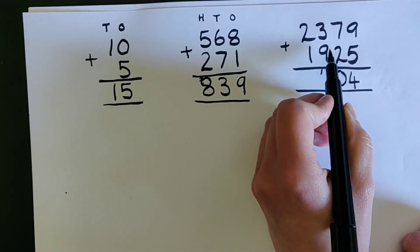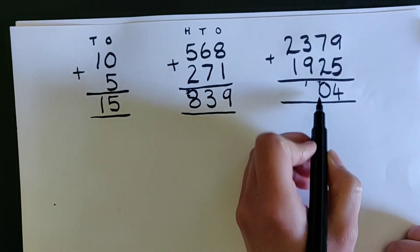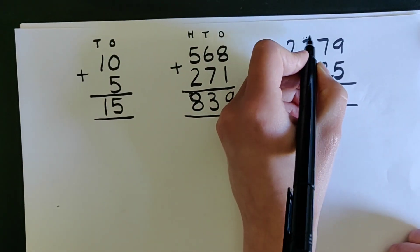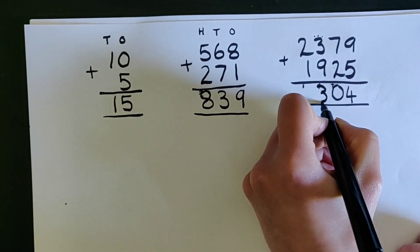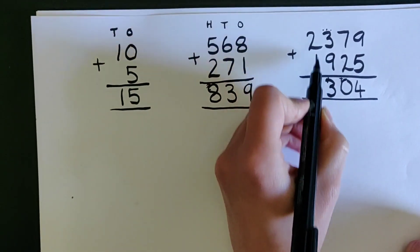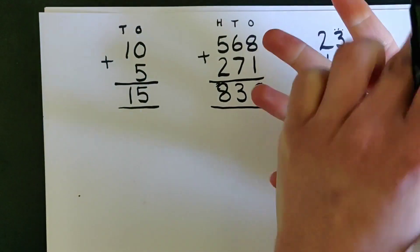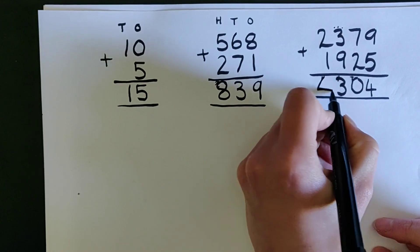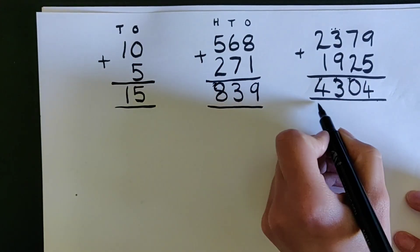3 add 9 add 1. Now it's probably easier for me to start on the 9 because it's the bigger number and count up that 3 and then add that one. So 9 10 11 12 13. There we go, 2 add 1 add 1, 2 add 1 add 1 is 4. So I've got 4304 all together there.